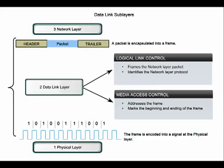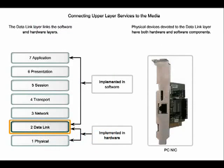To support a wide variety of network functions, the data link layer is divided into two sub-layers. The upper sub-layer is called the logical link control, and the lower sub-layer is called media access control. Separating the data link layer into sub-layers allows for one type of frame, for example an Ethernet frame, to access different types of media defined by the lower layer, such as a Wi-Fi network and a wired network. The logical link control sub-layer places information in the frame that identifies which network layer protocol is being used, allowing multiple Layer 3 protocols to utilize the same network interface and media.